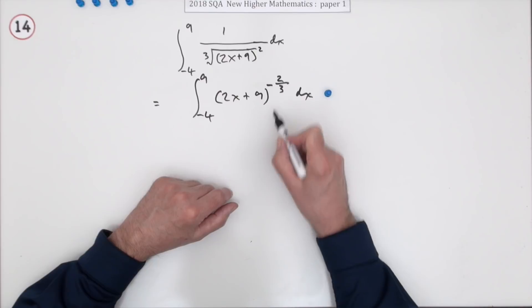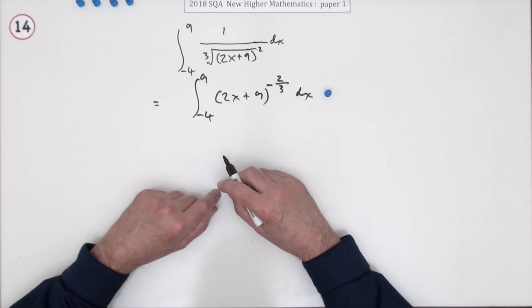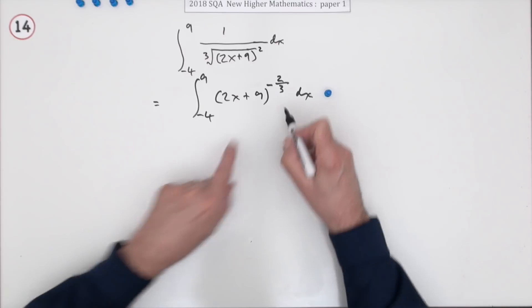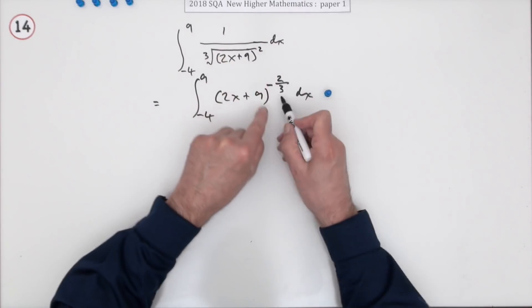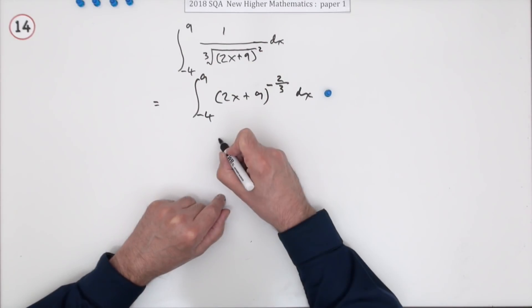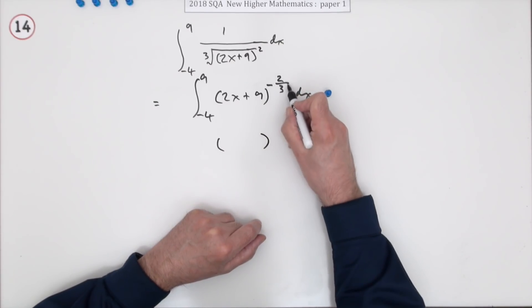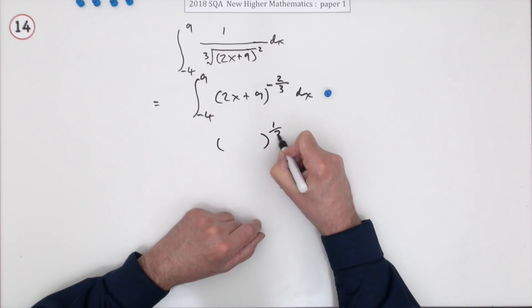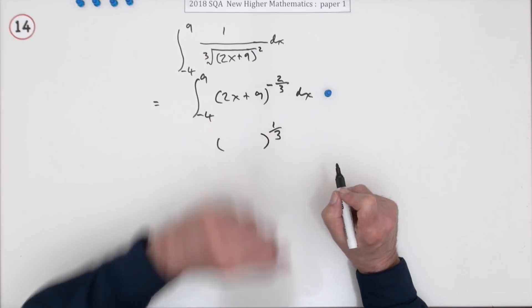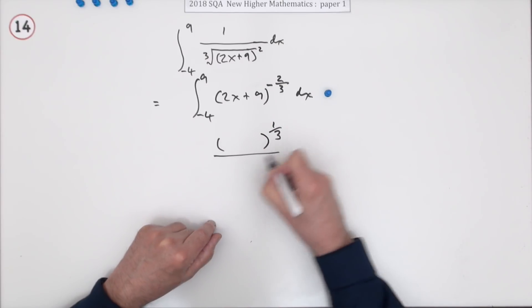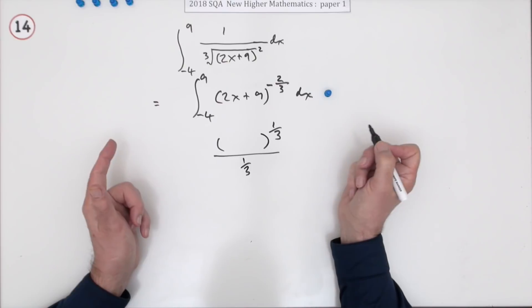Now integrate it. So if it was just an x, it would be add one to the power, divide by the power. I'll just keep it in a wee bracket just now. Add one, so that means you're adding fractions - you'll have to add three thirds. Three onto negative two is one, oh that's a lot neater. Now divide by that.